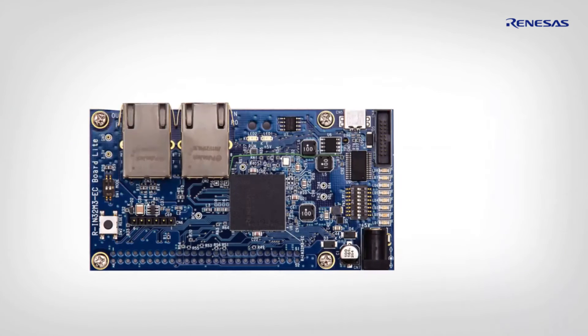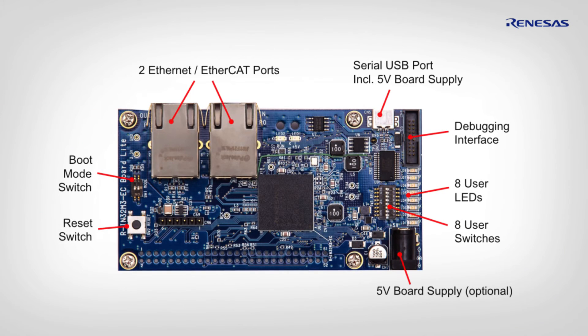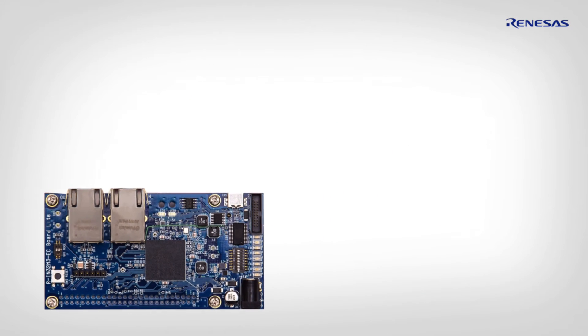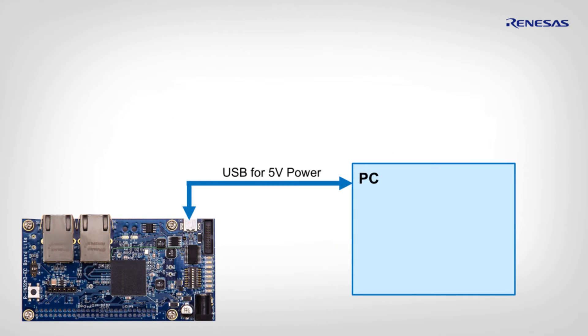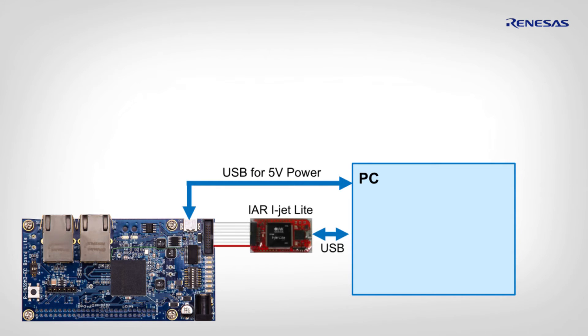In the following RIN demonstration, EtherCAT is used just as a protocol example. Other protocols would have a comparable setup but are not shown in this tutorial. Here you see the RIN solution kit board with its interfaces. First we connect the board to the IAR embedded workbench running on a PC.